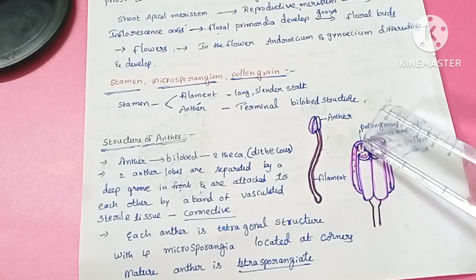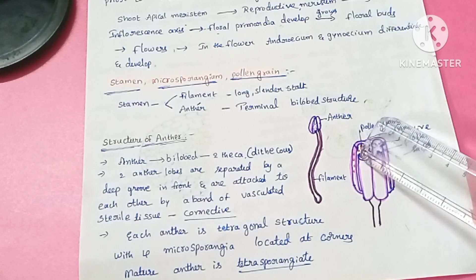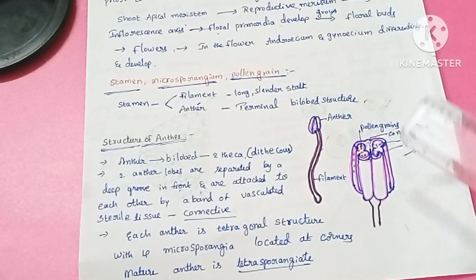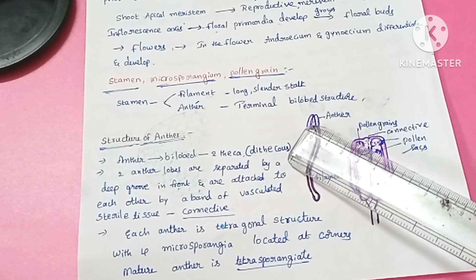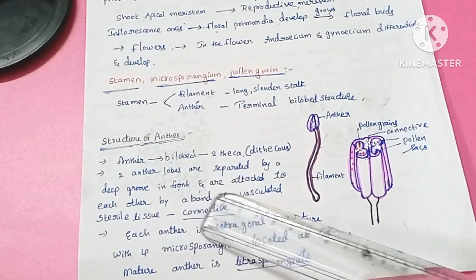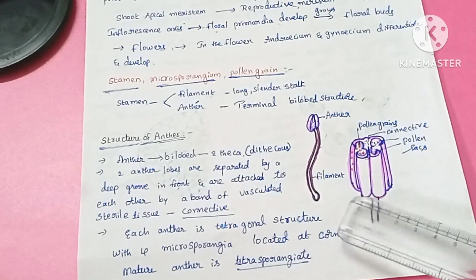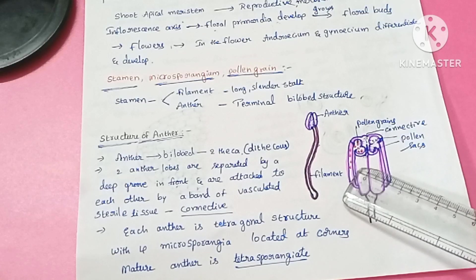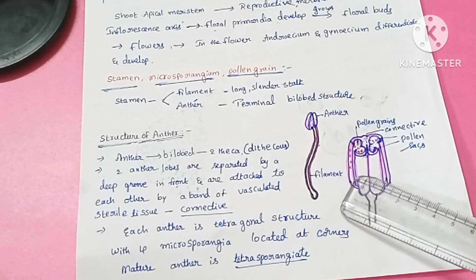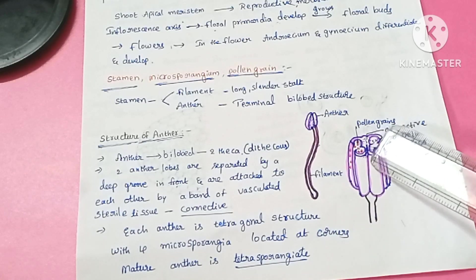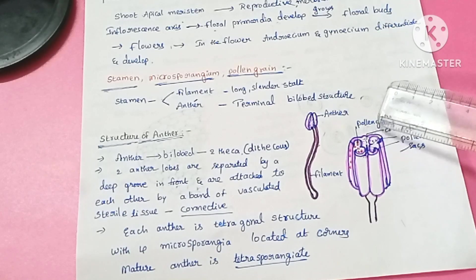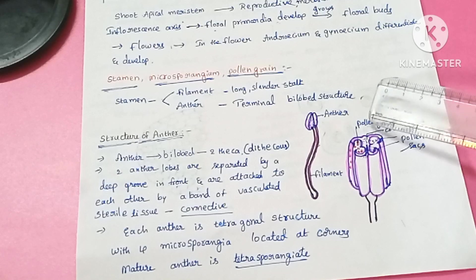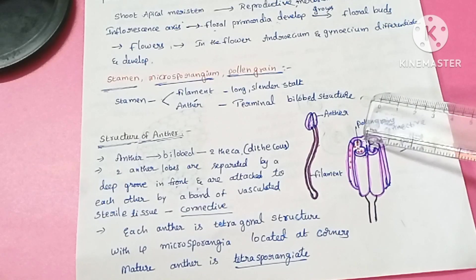Every lobe has two thecae. The two anther lobes are separated by a deep groove. From the front side, the two lobes are separated by a deep groove, and they are attached to each other by a band of vascularized sterile tissue, which we call the connective.